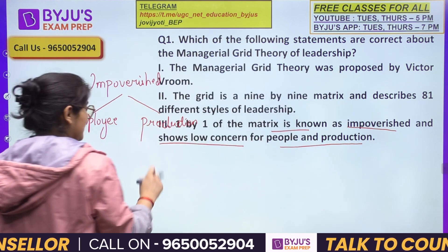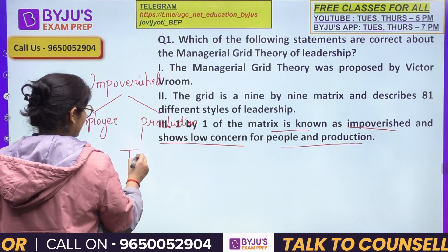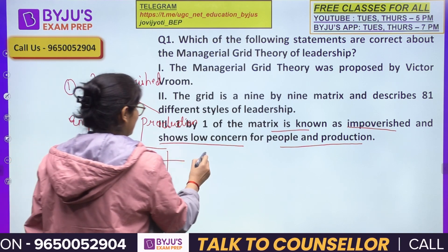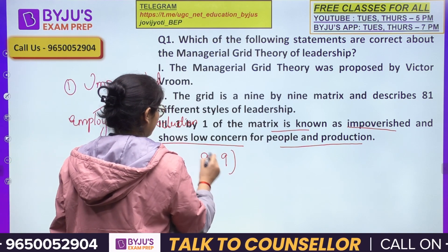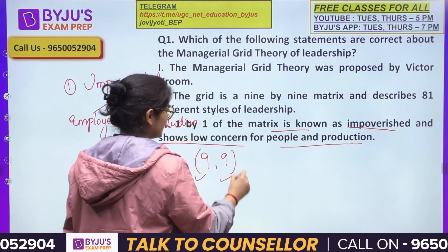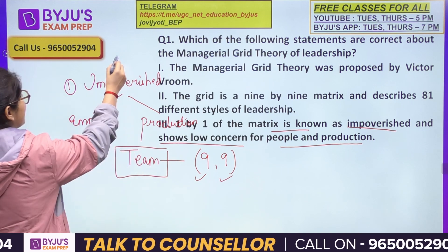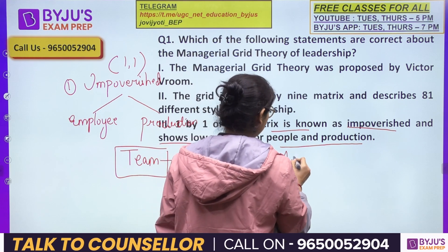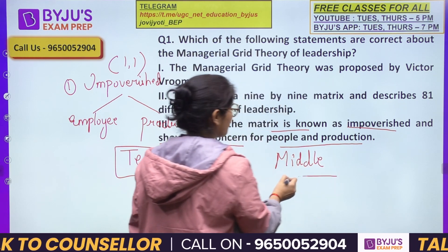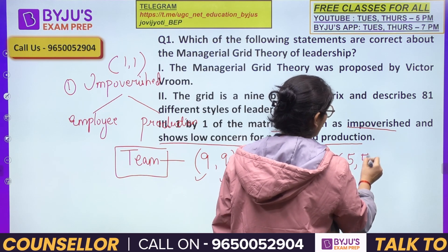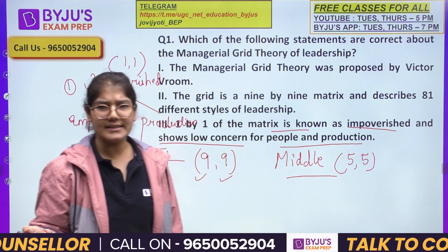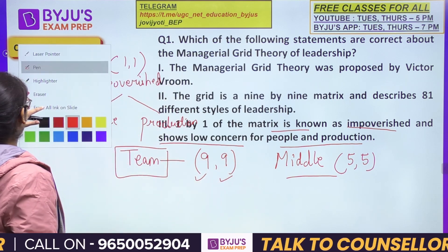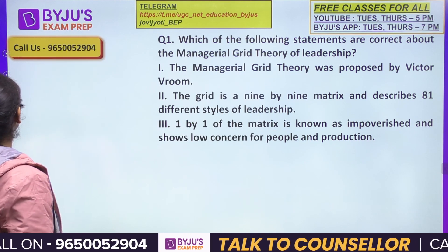Above that, we have three styles. The best is the team leadership style — a nine-by-nine score — with the highest concern for both employees and production. Then there is the impoverished style, and in the middle, a style showing a little concern for employees and a little concern for production. This middle leadership style is also correct.